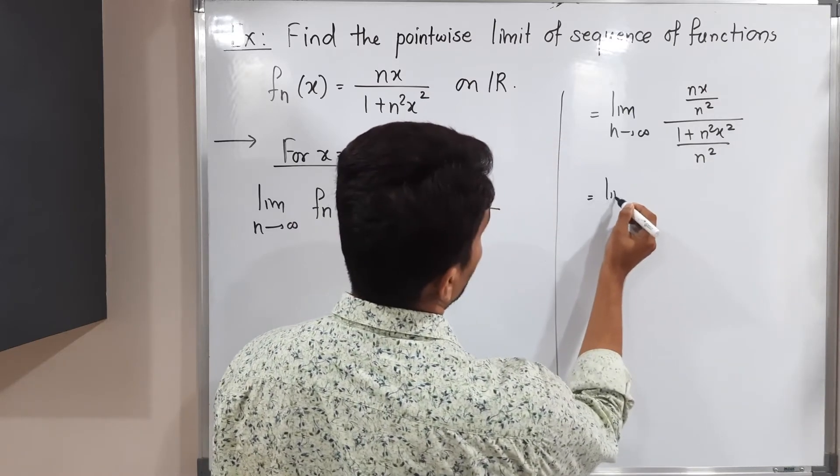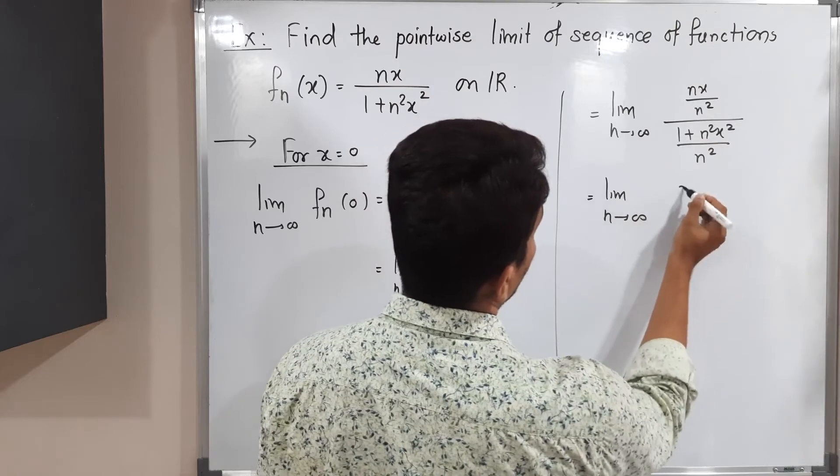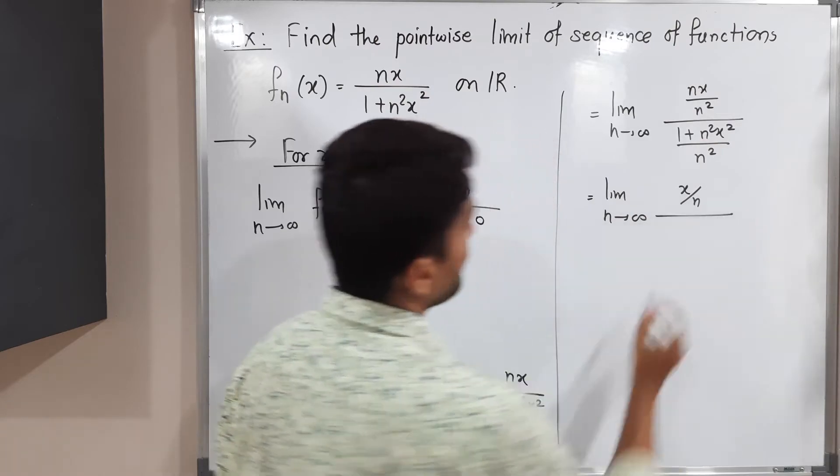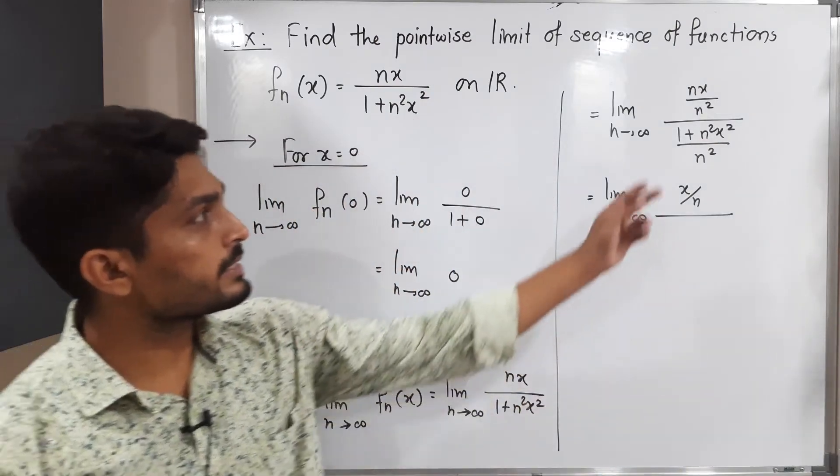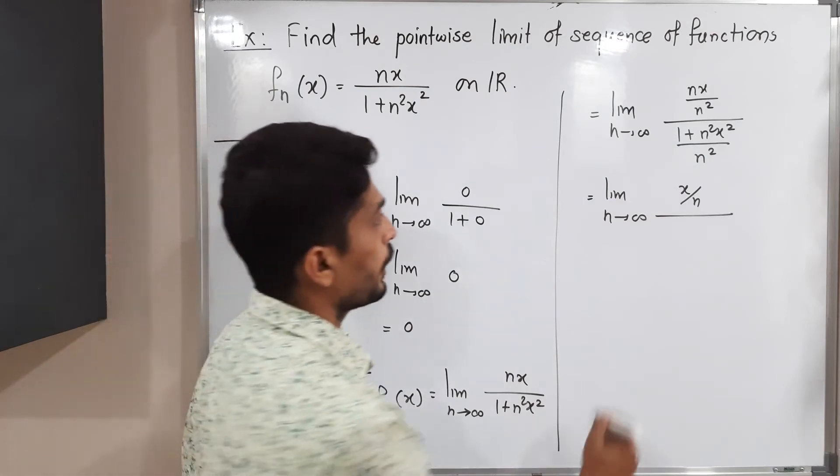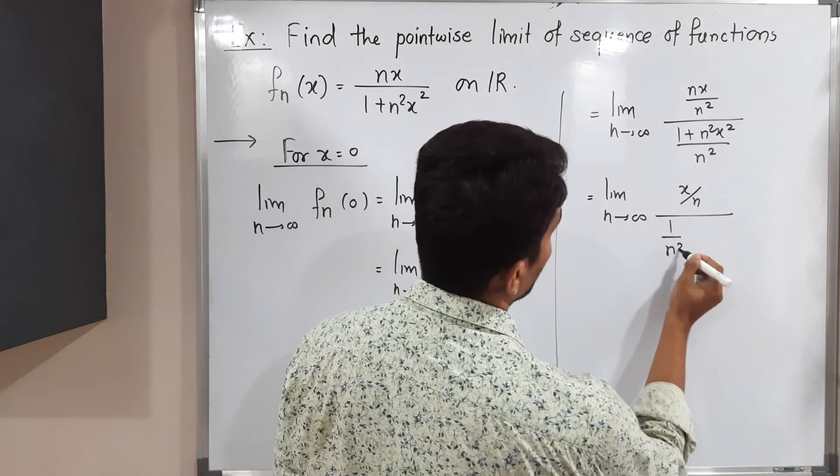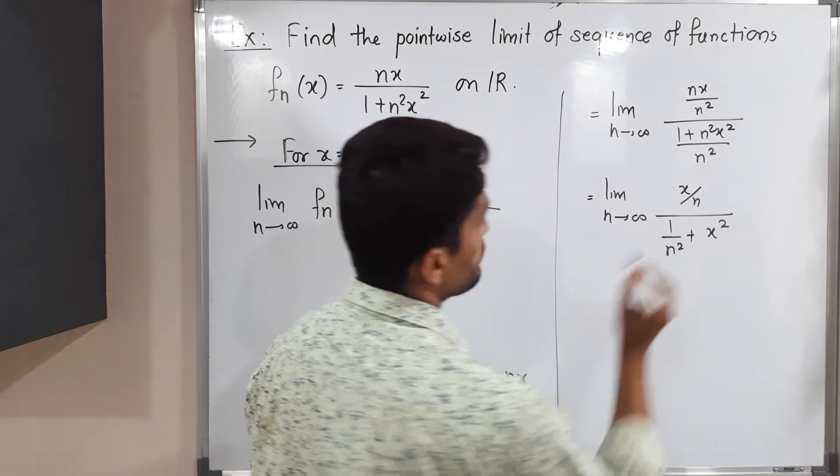This equals limit as n tends to infinity, and n will get cancelled. You will have x/n at the numerator. If you divide separately we will have 1/n² and here n² and n² cancel, we will have x² only.